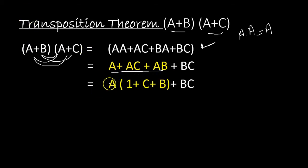When we take A as common, then what we get is one plus C plus B, and BC remains as it is. So here we have 1 + C + B. We know that 1 + A equals A, so what we get here is A.